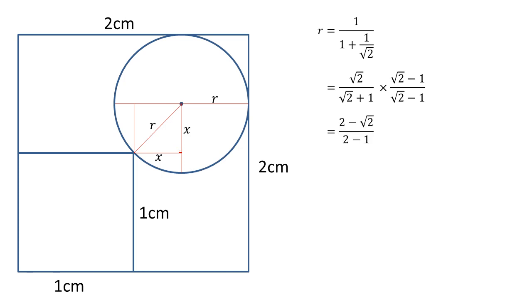This gives us (2 - √2) on top and (2 - 1) on the bottom, which is 1. So our radius equals 2 - √2.